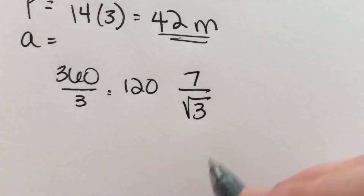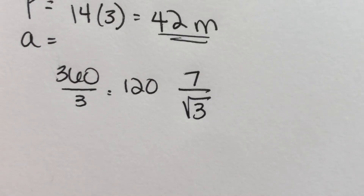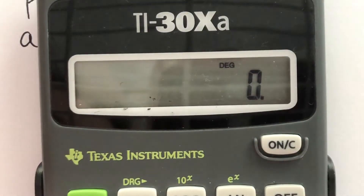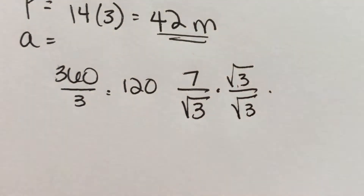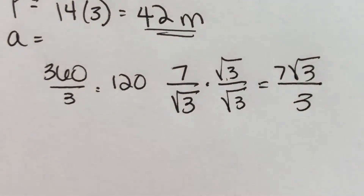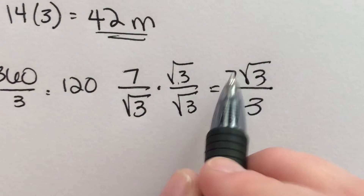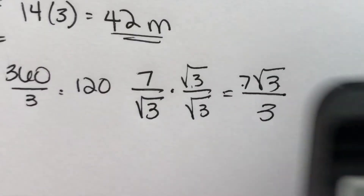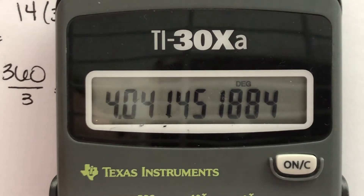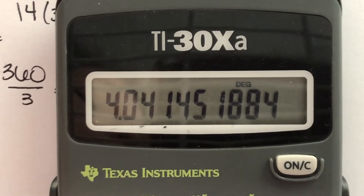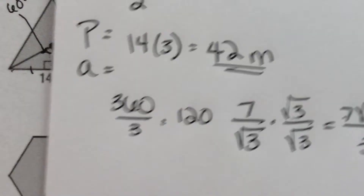I can't leave it as 7/√3, so I'll rationalize by multiplying by √3/√3, giving (7√3)/3. In decimal form: square root of 3 times 7, divided by 3, gives about 4.04. Rounding to the nearest tenth, that's just 4. So the apothem is 4 meters.